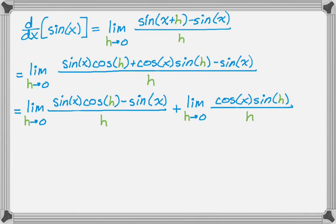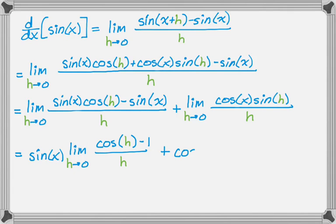Both limits involve h, so sine of x in the first limit is actually a constant and I can factor it out. And for the second limit, cosine of x doesn't involve h, so it's a constant and I can factor it out. So I get sine of x times the limit as h approaches 0 of cosine of h minus 1 all over h, plus cosine of x times the limit as h approaches 0 of sine of h over h. Both of the famous limits have shown up.